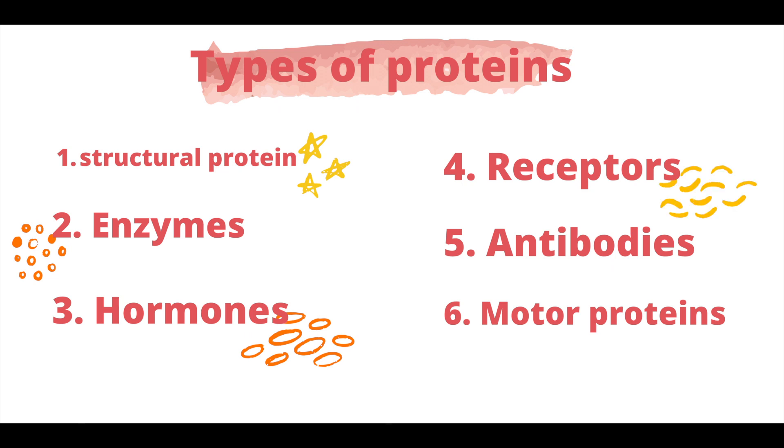Next we have receptors. A receptor is a protein molecule usually found embedded in the plasma membrane surface of a cell. It receives chemical signals from outside the cell, and when signals bind to the receptor, they cause cellular, tissue, or biological responses.